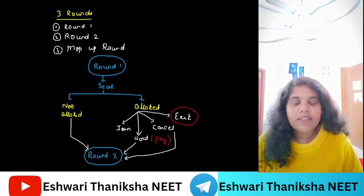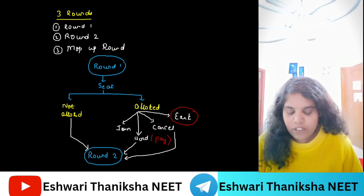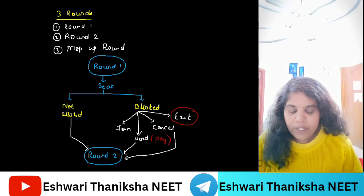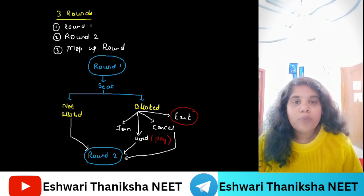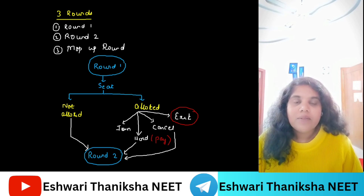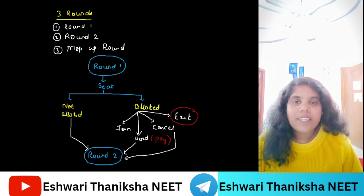If you select Choice 1, meaning is you can join the college — pay the fees and go and report to the college. Choice 2 means you are holding the college and then going to the second round. Students, make a note: you have to pay the fees in this round itself if you select Choice 2. Choice 3 means you are cancelling the seat — you don't want that seat, so you can go to the next round.